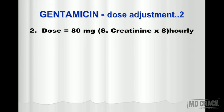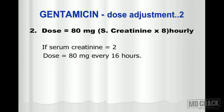This calculation gives you the frequency — that is, how many hours to repeat the gentamicin dose — and the amount given every time will be constant at 80 milligrams. For example, if serum creatinine is 2, then the calculation is 2 multiplied by 8, which becomes 16. So you give 80 milligrams of gentamicin every 16 hours.